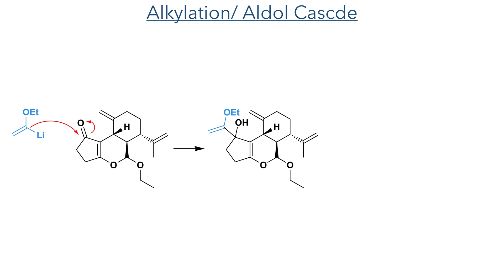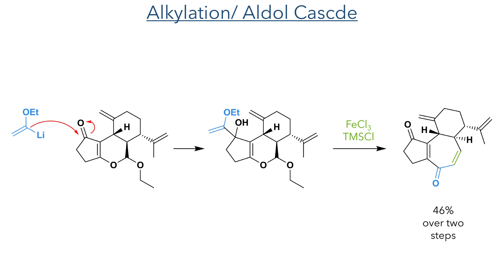The next step of the synthesis was the 1,2-addition of lithium ethyl vinyl ether, producing a tertiary alcohol which was required for the aldol cascade that would form the seven-membered ring at the core of the target molecule. This cascade was promoted by iron trichloride and TMS chloride, and formed the target compound in a 46% yield over two steps.